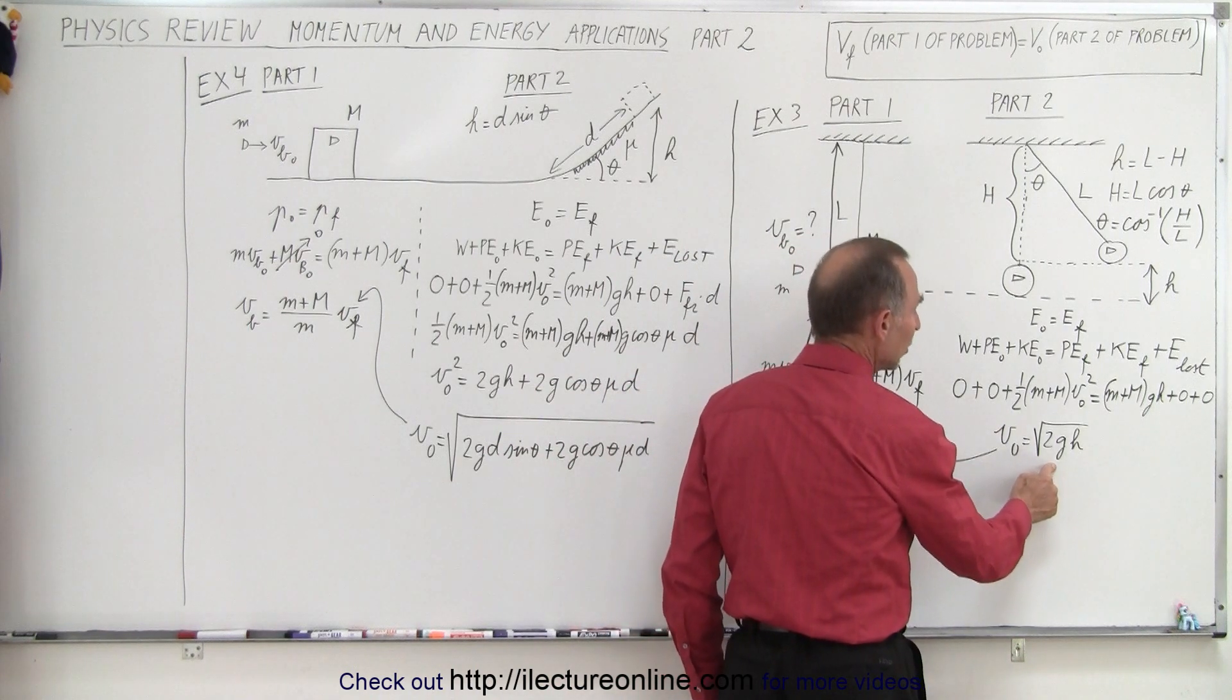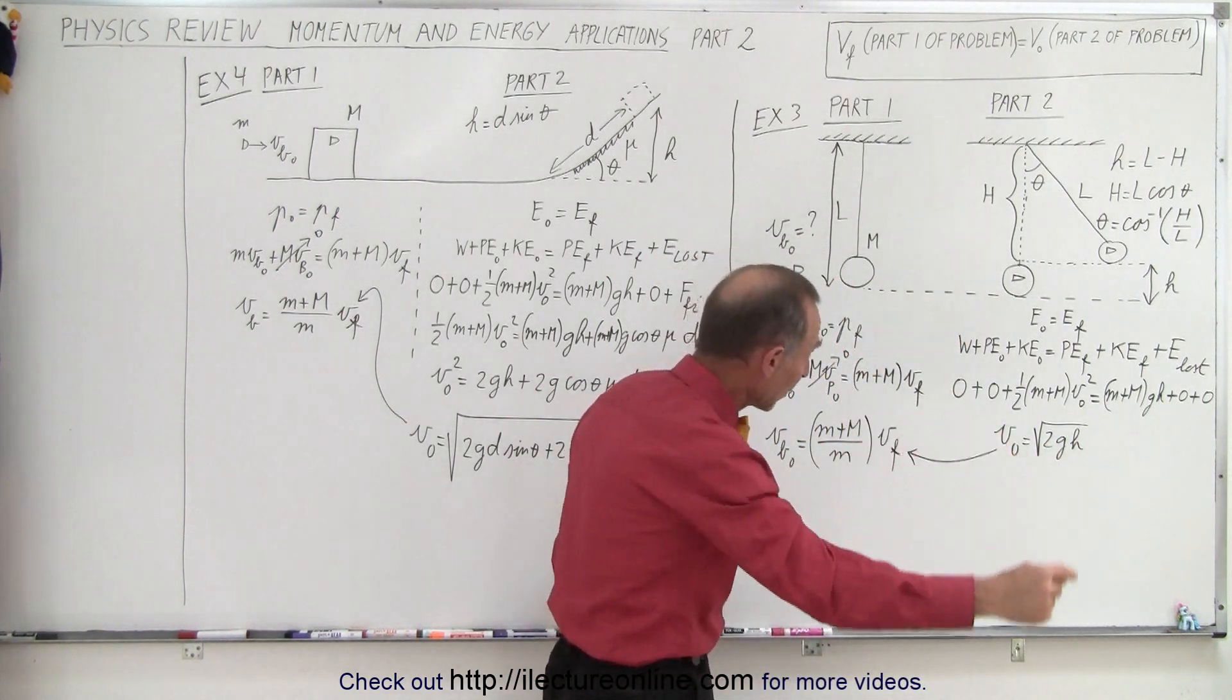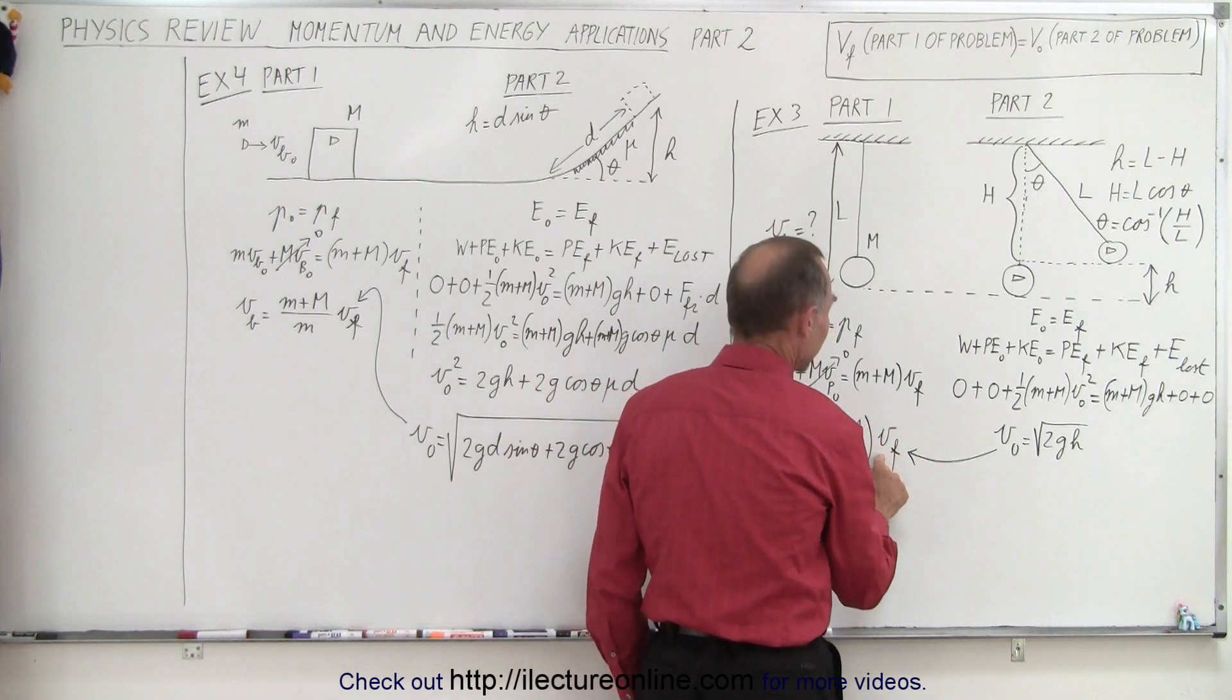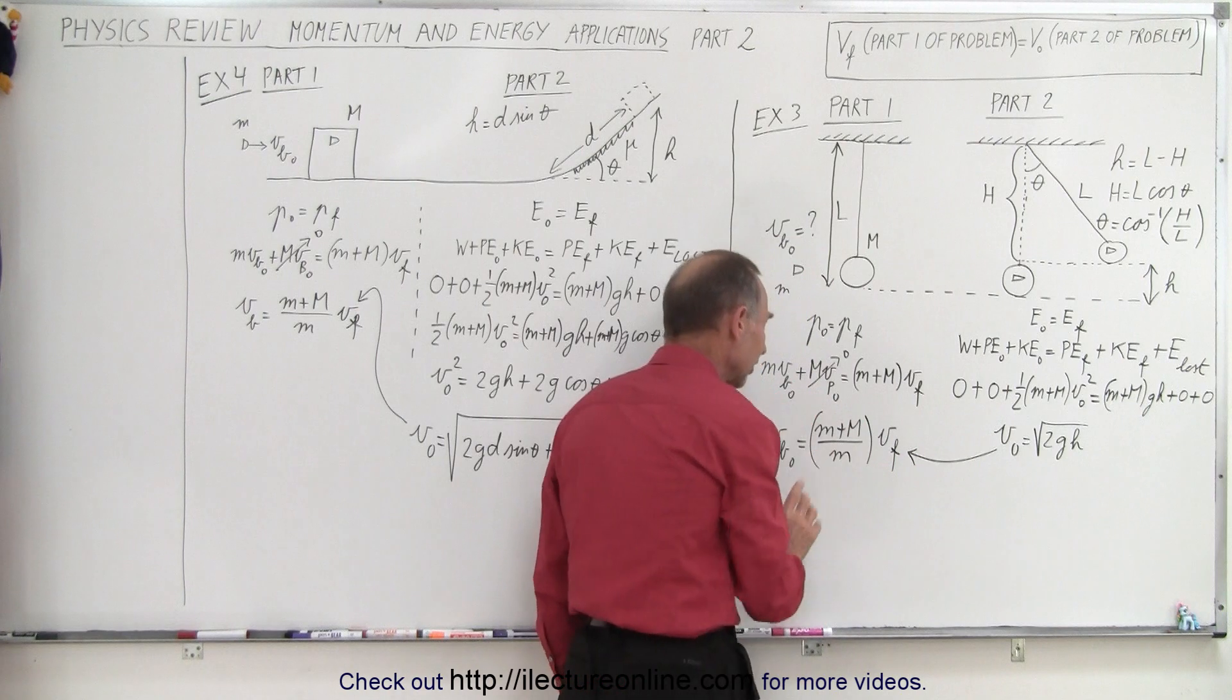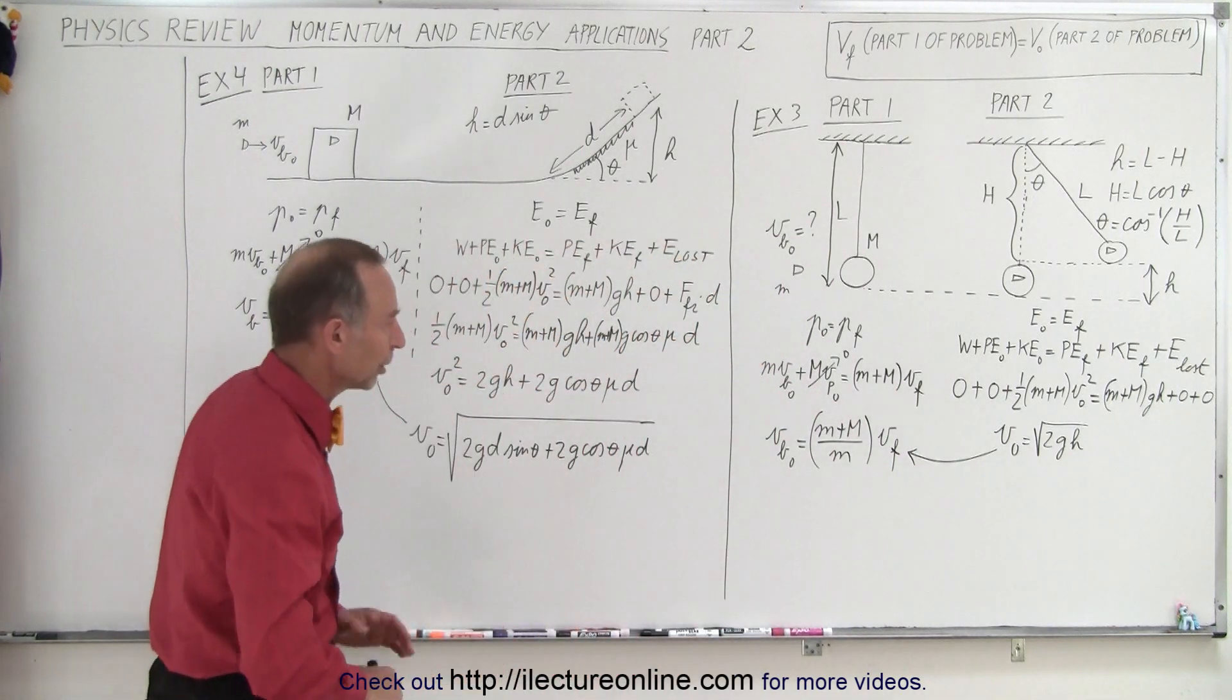We solve this equation for v initial, which is the square root of 2gh, which sounds familiar already at this point, and then we plug that into this velocity right here because we know that these two velocities are the same, and then we have an expression that allows us to find the initial velocity of the bullet.